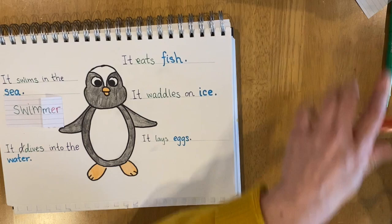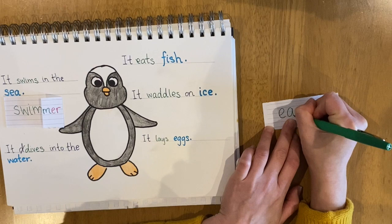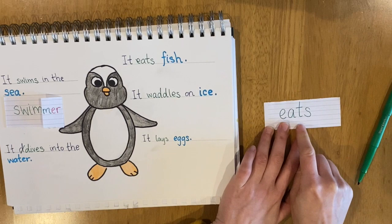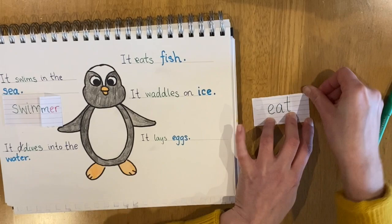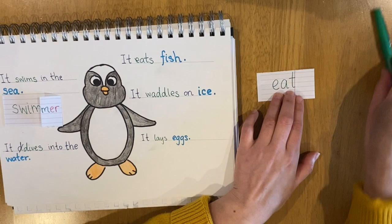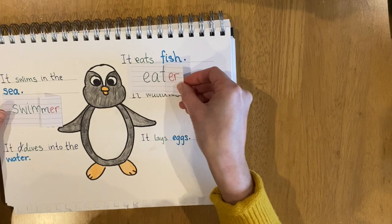Let's do that for eats now. So get another strip of paper. I'm going to copy the word eats — I'm going to make it much bigger, actually, I realise that swimmer was too small. Eats. How can we change the word eats to be a noun? It's an eater. So I'm going to fold my piece of paper like that, covering the S, and add ER. So now we've changed swims to swimmer, eats to eater.